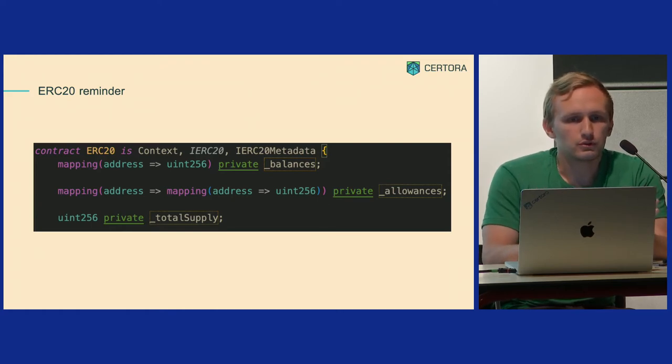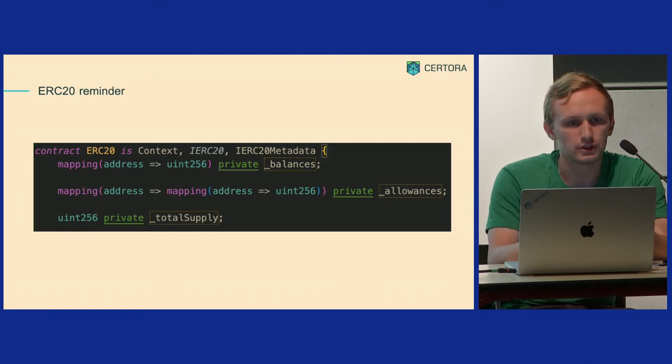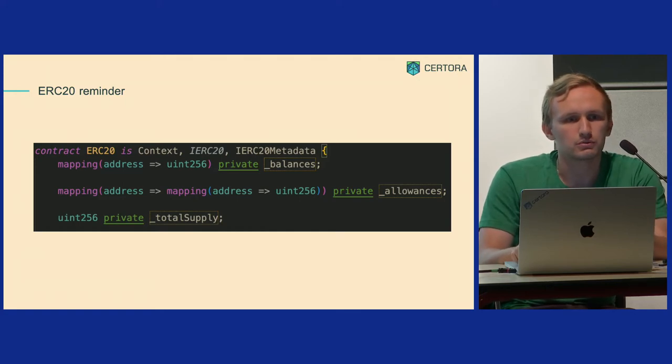S-store has one more interesting feature: you can track both the pre and post value of the Solidity variable. For example, if you have a balance of five tokens and somebody transfers you five more tokens, you get 10. In this case, the old value will be five and the new value will be 10 — the pre-state and post-state before and after the transfer. As a quick reminder, the ERC20 data structures include: mapping balances, allowances, and a variable total supply. Based on them, I will show different examples of how to use hooks, and then more advanced things like with structs.